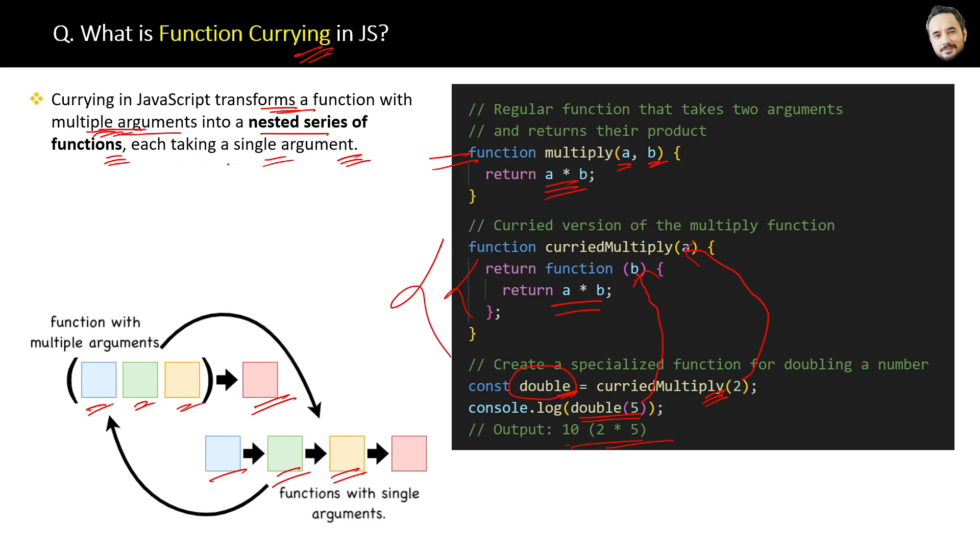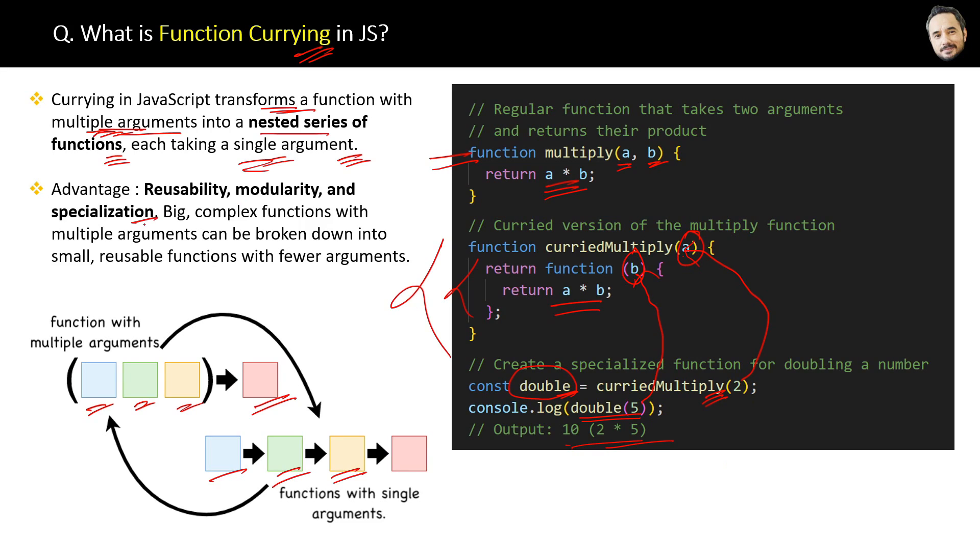Now my next question is what is the advantage of doing this? Because as humans we do not do anything until it has some benefit. Right? So the benefit of this is reusability, modularity, and specialization. How? Because big complex functions with multiple arguments can be broken down into small reusable functions with fewer arguments.